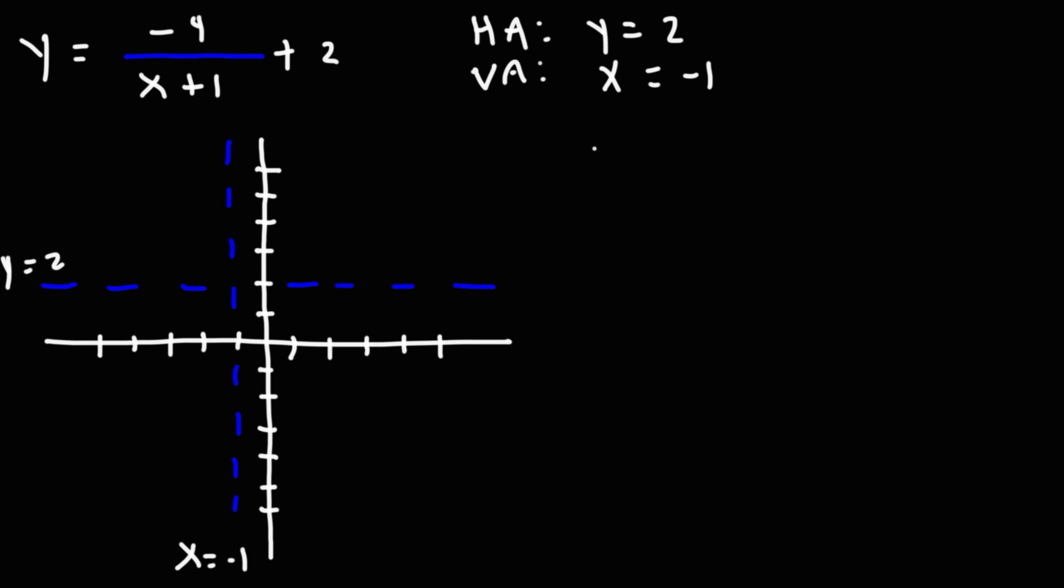Now let's go ahead and make a table. So let's pick one number to the left of the vertical asymptote. I'm going to try negative 2. So plug in negative 2 into the original formula. We'll have this. Negative 2 plus 1 is negative 1. Negative 4 divided by negative 1 is positive 4 plus 2. That will give us 6.